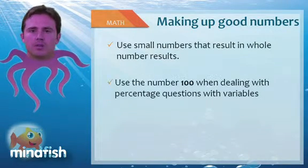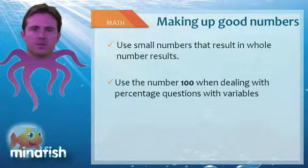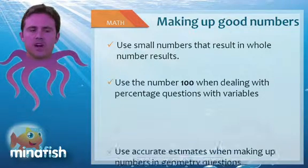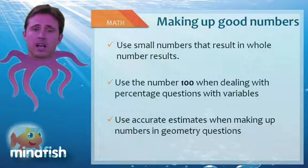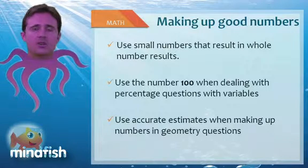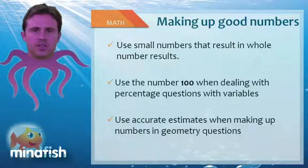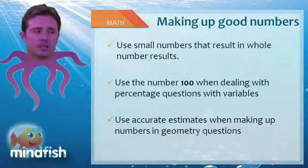Use the number 100 when you're dealing with percentage questions. This will make it as easy as possible to do your first percentage change. And use accurate estimates when making up numbers on geometry questions. So if you're making up an angle, as long as you have 180 degrees in a triangle and 180 degrees in a line, you're usually going to be fine. But the more accurate your angle estimate is, the more accurate the answer choice will be relative to what you see in the picture.